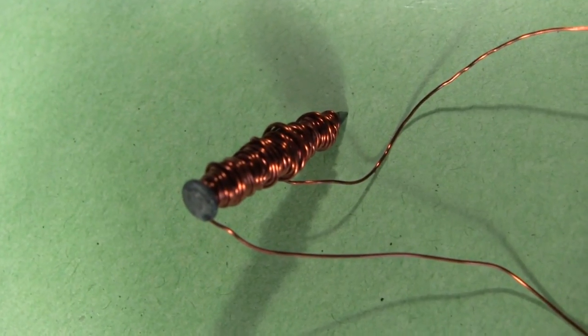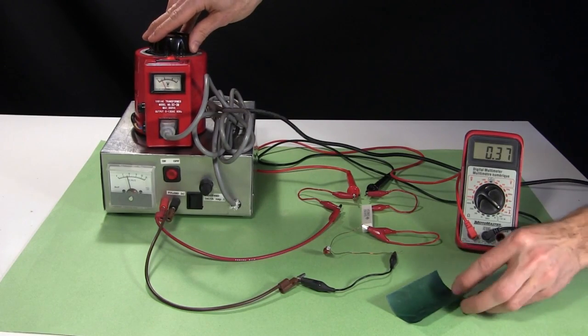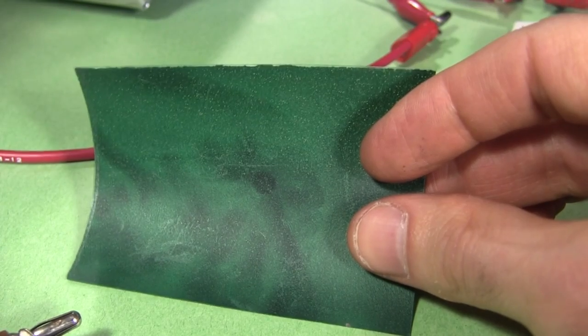Here's a nail that I wrapped some wire around to make an electromagnet. As I turn up the power supply, the electromagnetic field becomes strong enough to affect the magnetic viewer.